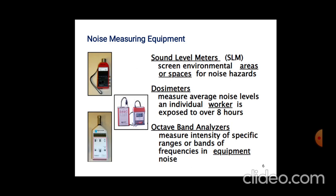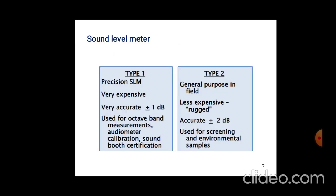The Sound Level Meter has two types: Type 1 and Type 2. Type 1 is used where precision is required and is very expensive, with accuracy of plus or minus one decibel. Type 2 is less expensive, with accuracy of plus or minus two decibels, and is used for general purpose field measurements. Type 1 is used for octave band measurement, audiometer calibrations, and sound booth certifications, while Type 2 is used for screening and environmental sampling.